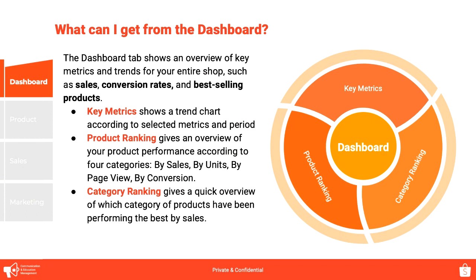Let's take a look at the dashboard. The dashboard tab shows an overview of key metrics and trends for your entire shop — it's the most jam-packed version of Business Insights. It shows a trend chart according to selected metrics and period, which you can customize. It also shows product ranking — an overview of product performance by sales, units, page views, and conversion — as well as category ranking. If you want to learn more about Business Insights, check the Seller Education Hub, which also has advanced training videos.